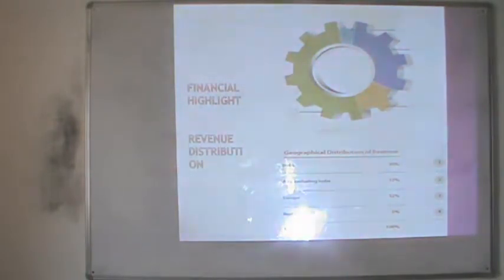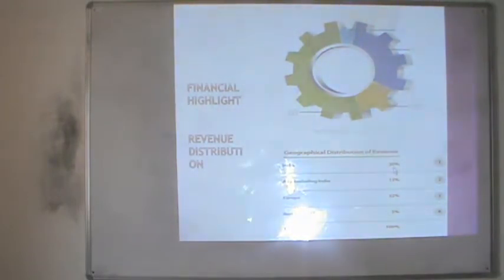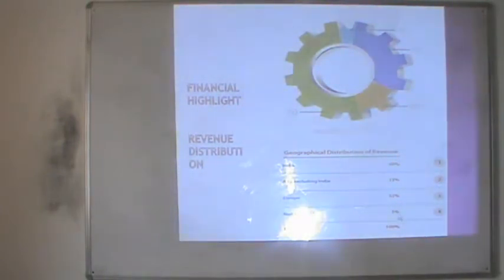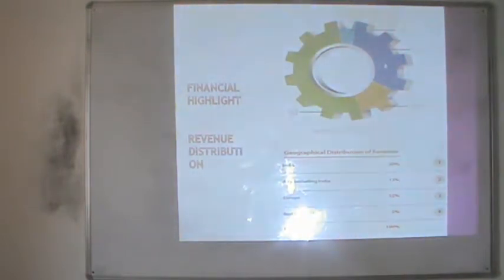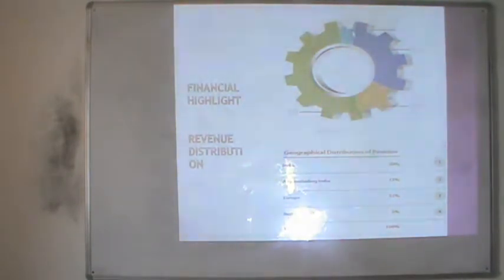For example, the first section shows us the financial highlights part — that is revenue distribution. It shows that from India the company has earned 30% of its revenue, from Asia excluding India 13%, from Europe 52%, and from the rest of the world 5%, totalling 100%. The pie chart shows each region's share: India, other Asia, Europe, and the small portion from the rest of the world.